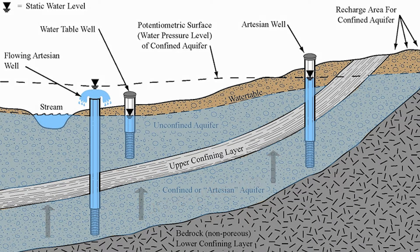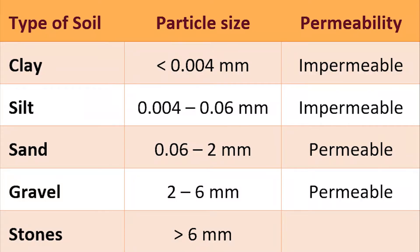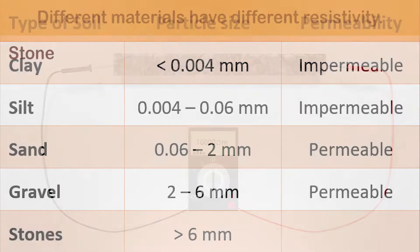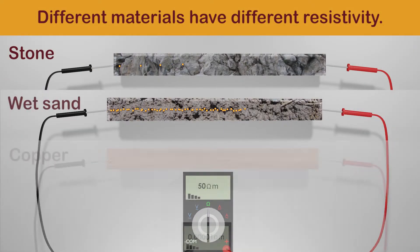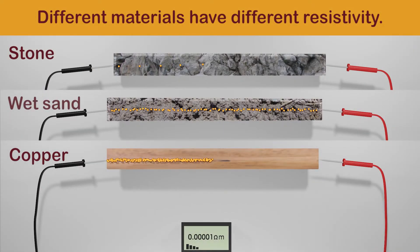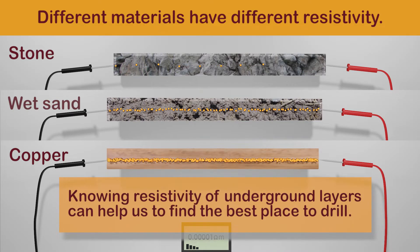Here are some names used to define different types of wells and aquifers. Different soil types, particle sizes, and permeability. Different materials have different electrical resistivity. Knowing the resistivity of underground layers can help us find the best place to drill.